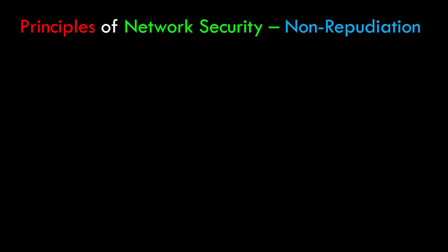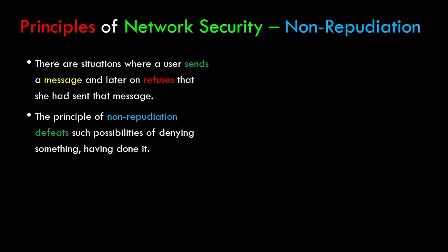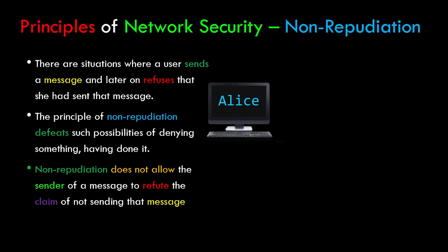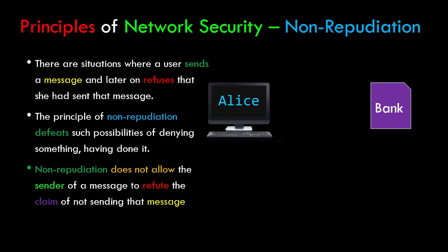Now let's have a look at the principle of non-repudiation. There are situations when a user sends a message and later refuses that she sent that message. The principle of non-repudiation defeats such possibility of denying something having done it — it does not allow the sender to refute the claim of not sending the message. For example, Alice could send a fund transfer request to a bank, and after the bank performs the transfer, she could claim she never sent the instruction, thus repudiating her fund transfer.